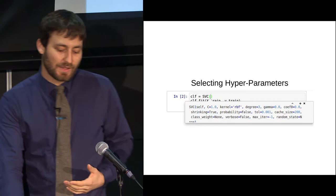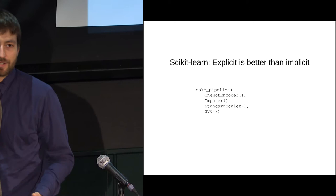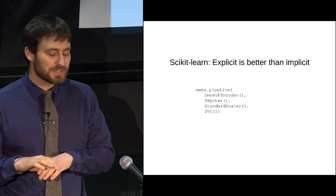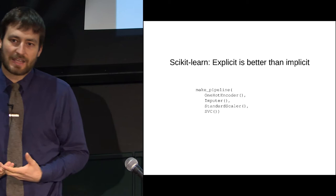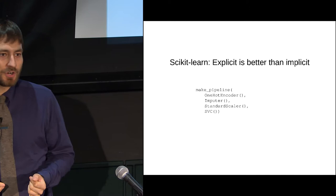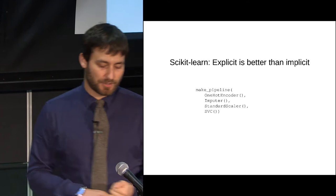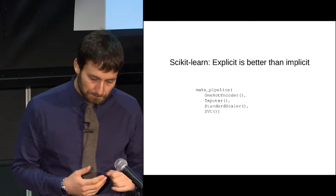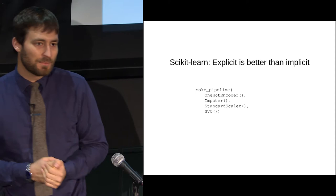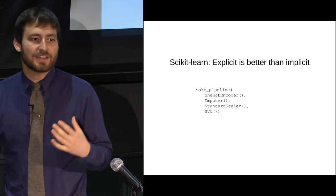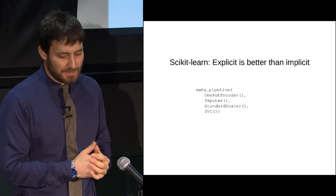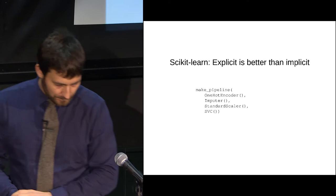Another problem is preprocessing. Scikit-learn is designed so that you have to do everything explicitly. If you have a real dataset, you need to take care of encoding categorical variables, ensure there are no missing values, and make sure the data is on a scale that makes sense for your model. Here you can see what you'd need to do to apply a support vector machine: encoding of categoricals, imputation, scaling. Scikit-learn gives the user a lot of control, but if you don't do this, things will either work very badly or break. You need a lot of domain knowledge, and this is another stumbling block for beginners.